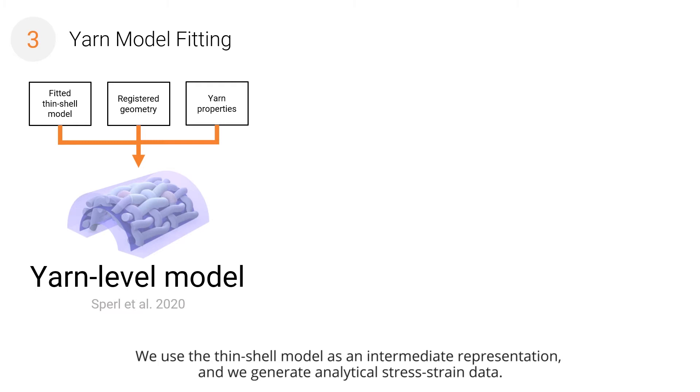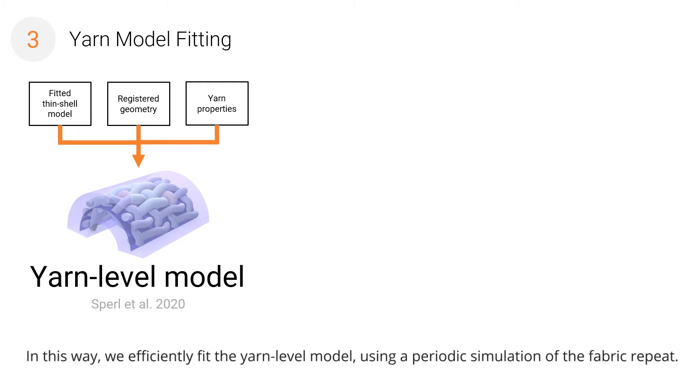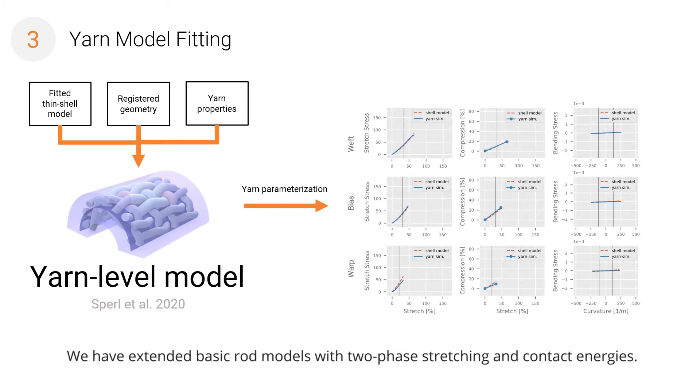We use the thin-shell model as an intermediate representation and we generate analytical stress-strain data. In this way, we efficiently fit the yarn-level model using a periodic simulation of the fabric repeat. We have extended basic rod models with two-phase stretching and contact energies. These extensions capture the complexity of the swatch-level response.